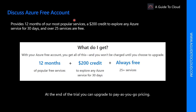An Azure free account provides subscribers with 12 months of the most popular services, a $200 credit to explore any Azure services for 30 days, and over 25 services that are always free. Some common questions about the free account: Do you pay anything to start? No — starting is free, plus you get a $200 credit to spend during your first 30 days. What do you need to sign up? All you need is a phone number, a credit or debit card, and a GitHub or Microsoft account.